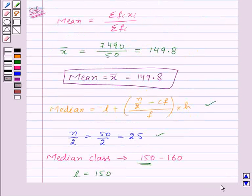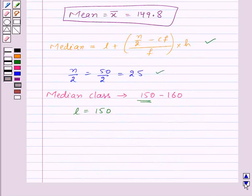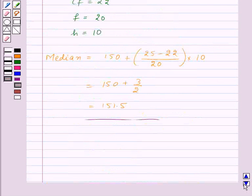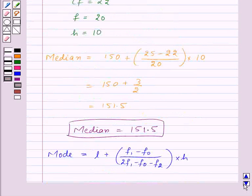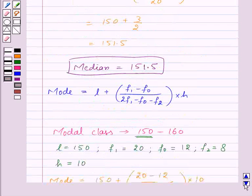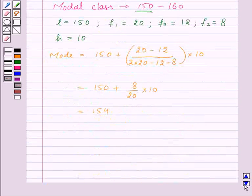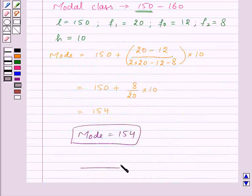Thus, for the given data, mean is equal to 149.8, median is equal to 151.5, and mode is equal to 154. With this, we have finished this session. Hope you must have understood the question. Goodbye, take care and have a nice day.